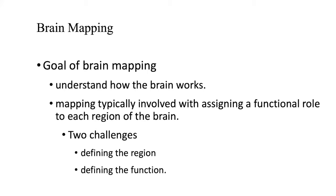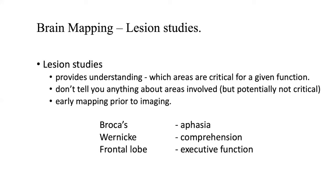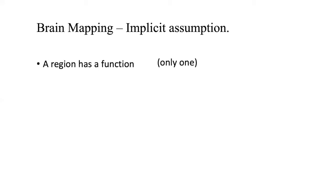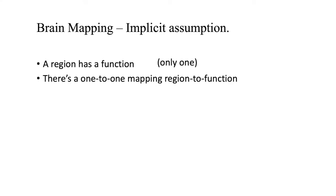Mapping, as I understand the field of human brain mapping, is to assign a function to a region. There are two challenges associated with that: one is defining the region, and the other is defining the function. I'm going to focus my talk around those two challenges. Lesion studies provide an understanding of which areas are critical, and there's lots of history behind this. But the implicit assumption is that the brain region has a function — a one-to-one mapping of a region to function.